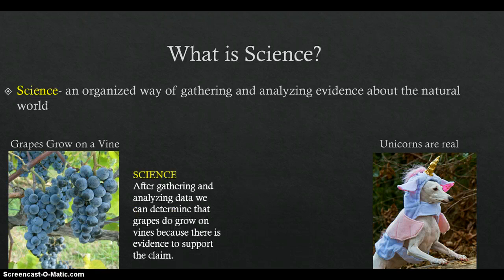Because we can grow grapes and collect evidence, we can prove that grapes grow on vines and conclude that it is a scientific statement. This is considered science.